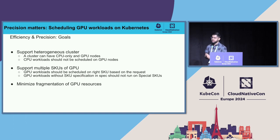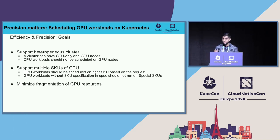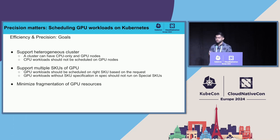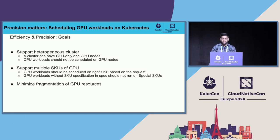First, you need to support a heterogeneous cluster, where a cluster can have both CPU-only and GPU nodes. Theoretically, CPU workloads can run on GPU nodes, but it's not the best utilization of them. We came into this requirement mostly when our machine learning scientists wanted to use Ray jobs. Ray is a framework by Anyscale where you can launch a job that has CPU-only workloads on some pods and GPU-dedicated workloads on other pods. You also have to support multiple stock-keeping units for GPUs, and minimize fragmentation of GPU resources to schedule efficiently.